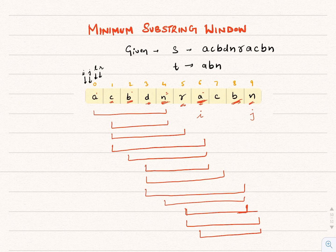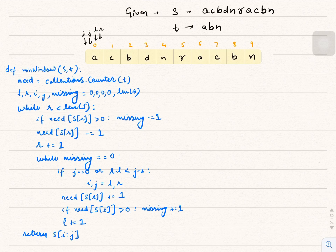We can easily print the characters present at these indices. This is the gist of the solution and how we find the minimum substring window. Next, let's look at the code and dry run it on the given example.